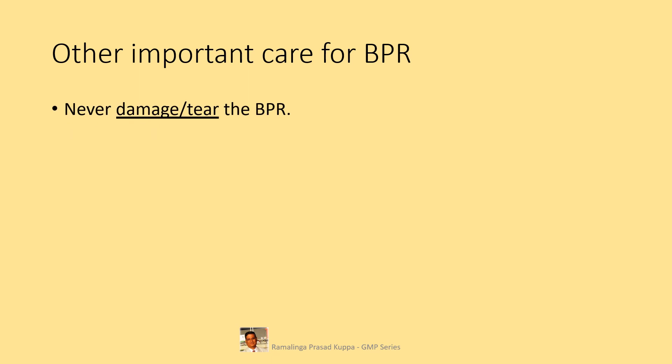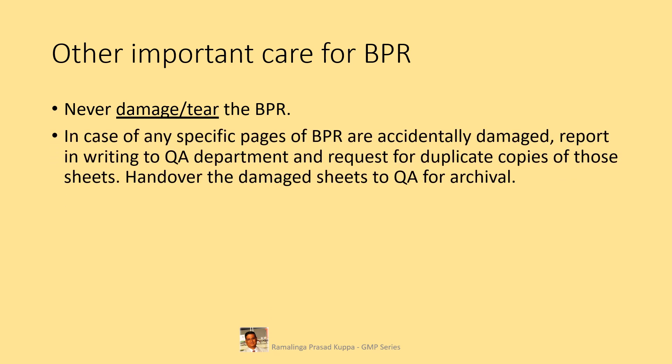Never damage or tear the BPR — damaging a GMP constitutional document is a crime; it is law as far as manufacturing activity is concerned. In case any specific pages of a BPR are accidentally damaged, report in writing to the QA department and request duplicate copies of those sheets. Hand over the damaged sheets to QA for archival. A duplicate can be obtained from authorized QA personnel with justification.